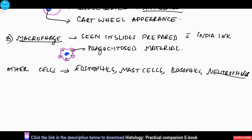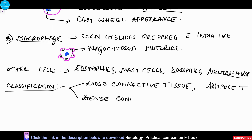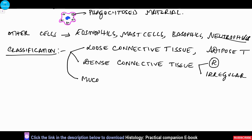Now after knowing the fibers and the cells, we will see the classification of connective tissue. It is basically classified into loose connective tissue — including areolar and adipose tissue — and dense connective tissue, which is further divided based on fiber arrangement into regular and irregular. There is also a special type called mucoid or embryonic connective tissue.